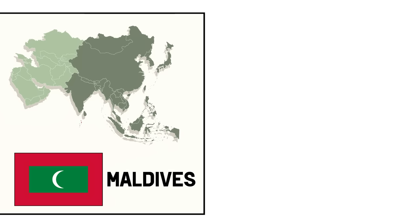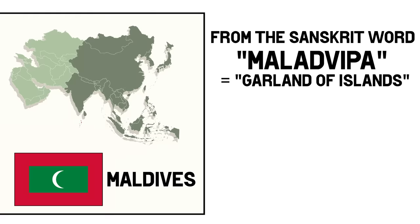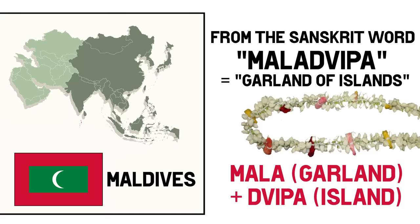Also islands, but many smaller ones, the Maldives, which probably get their name from the Sanskrit word Maladvipa, meaning garland of islands — from mala meaning garland, and dvipa meaning island. Garland means a wreath of flowers.